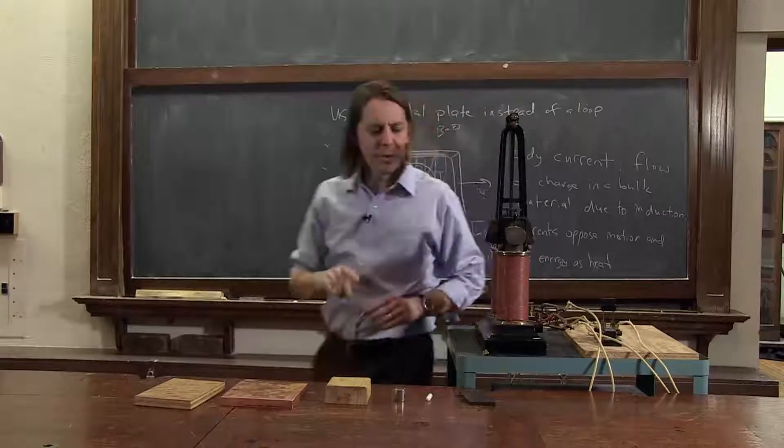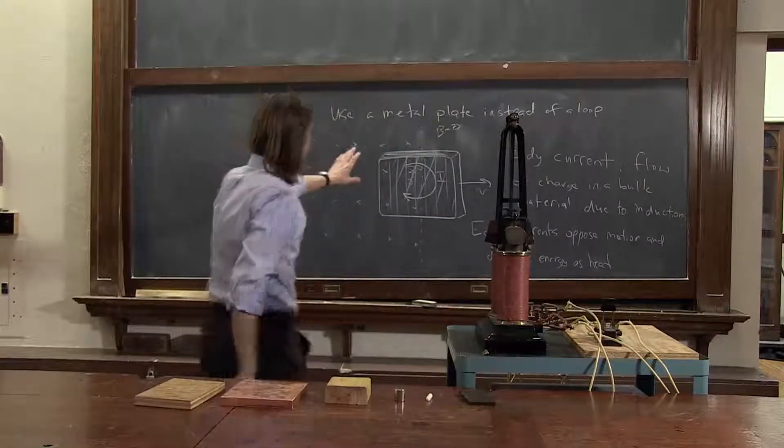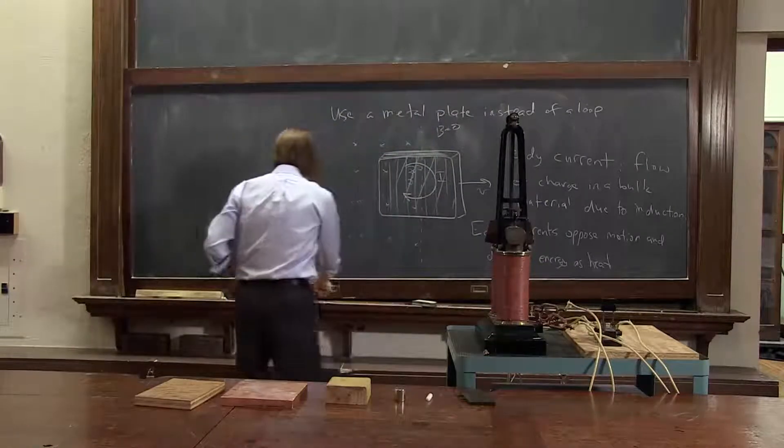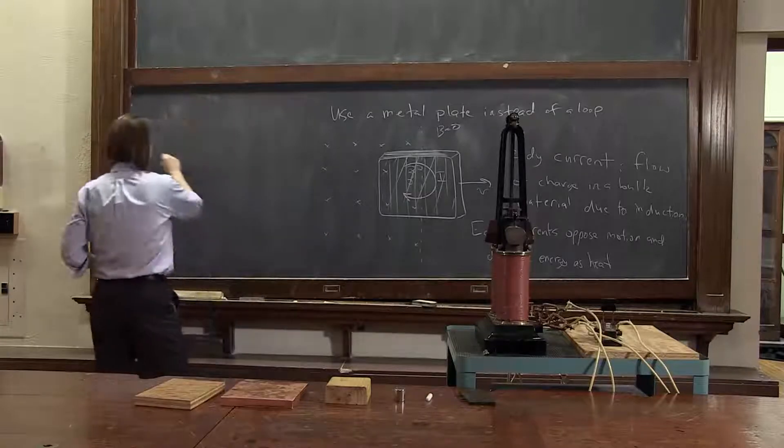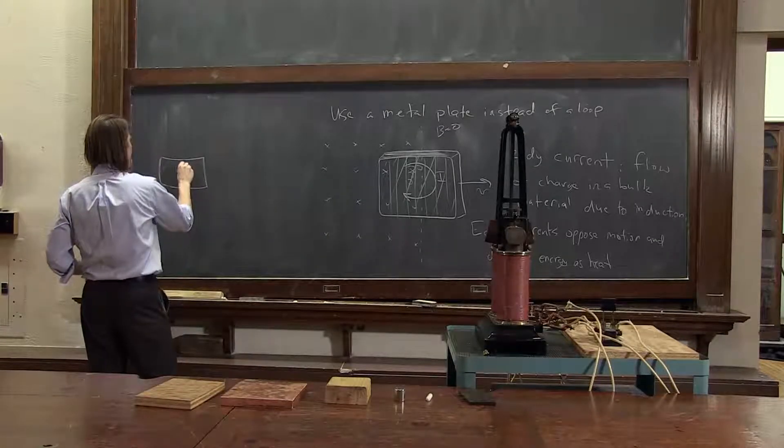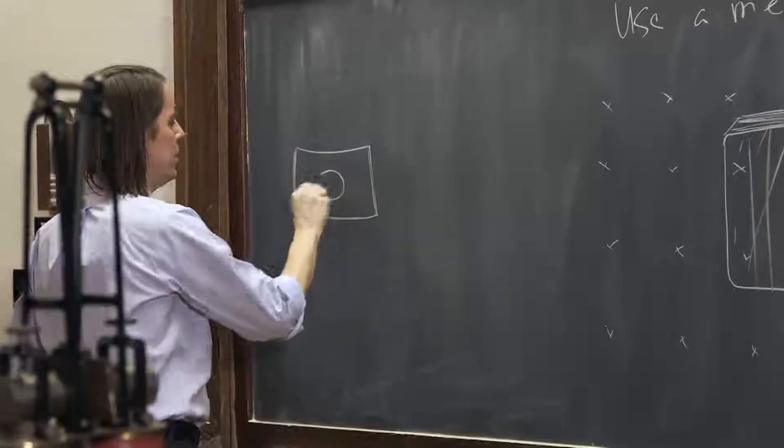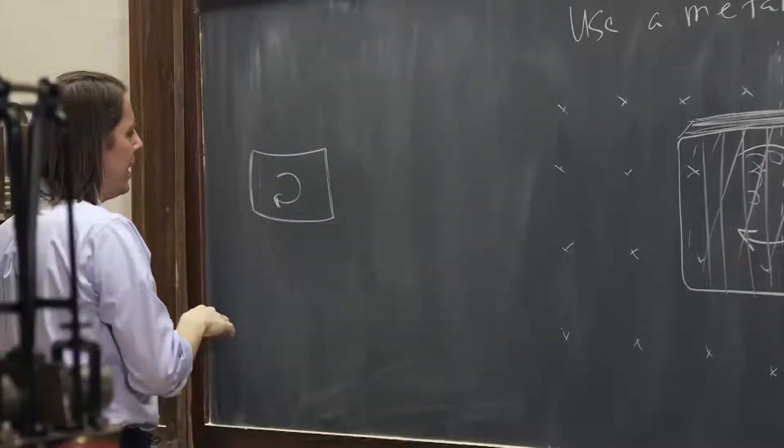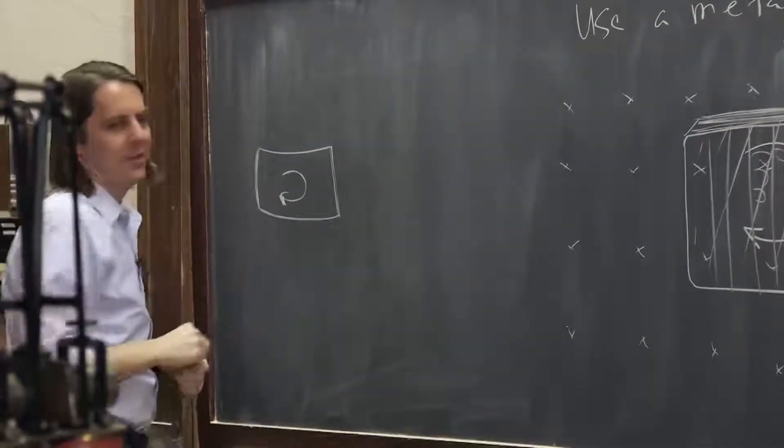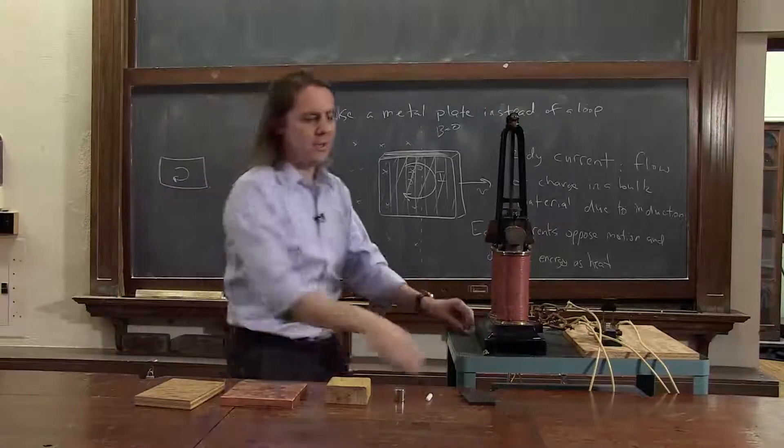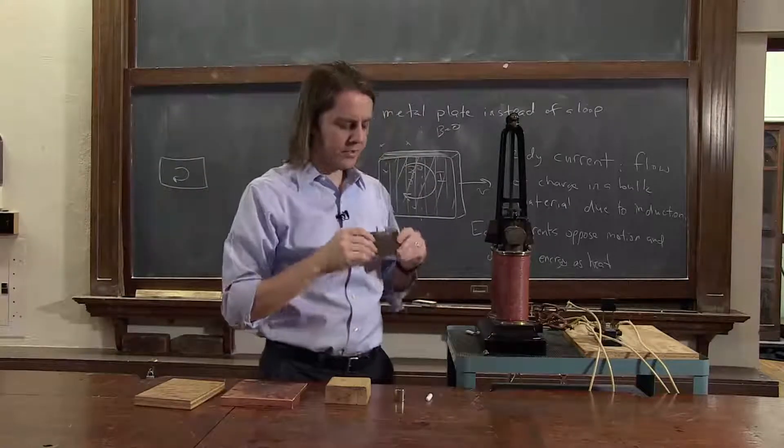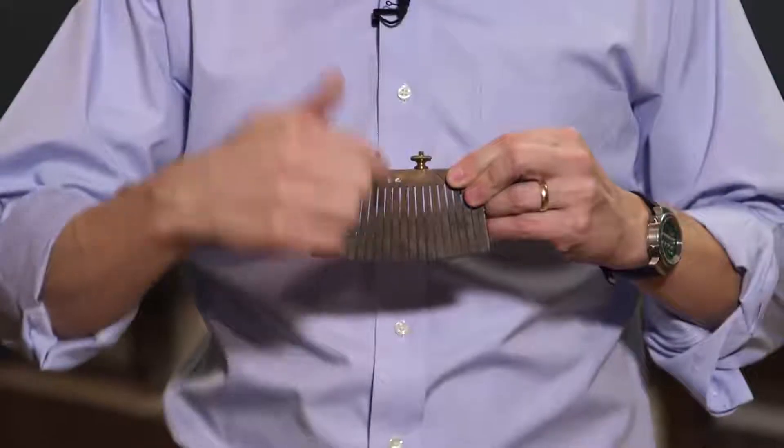Now, one way we can really further confirm that it's eddy currents is we can use a different plate. So that was a solid piece of copper, and eddy currents were flowing in it. I can also get one that has these little fins. You can see it's all slotted. It's been cut.